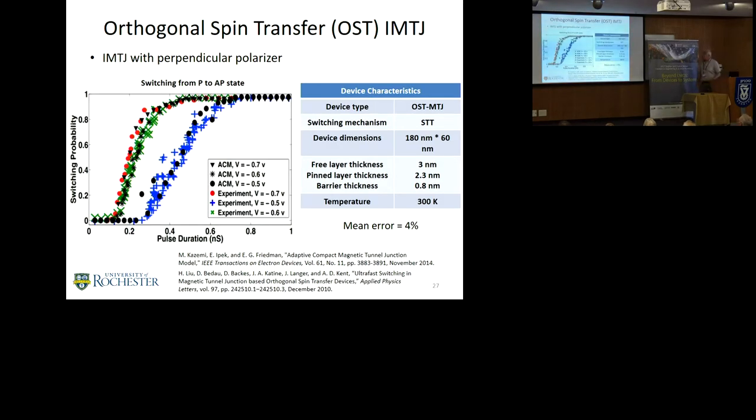We looked at an IMTJ with a perpendicular polarizer. This is primarily STT. Error only on the order of 4%, experimental data for different levels of voltages. You can see the switching probabilities coincide quite nicely with the model data.